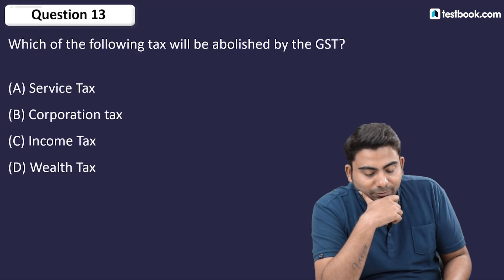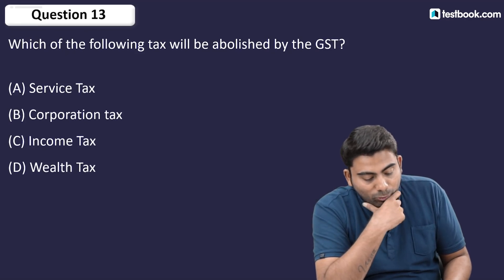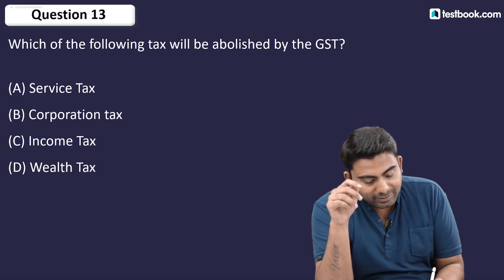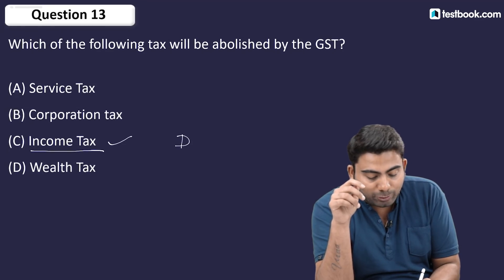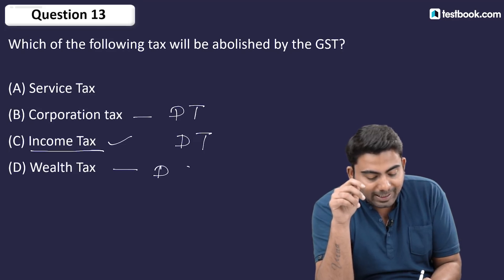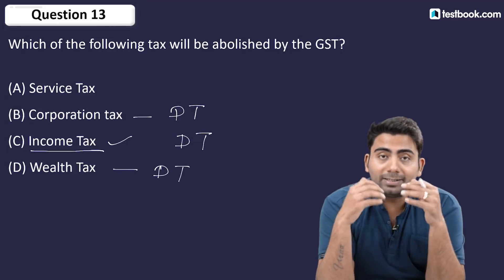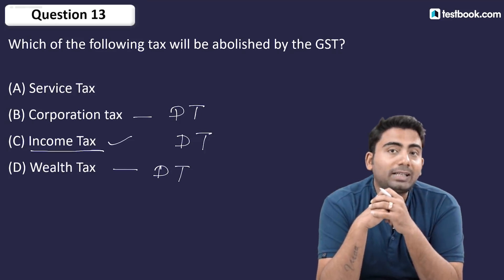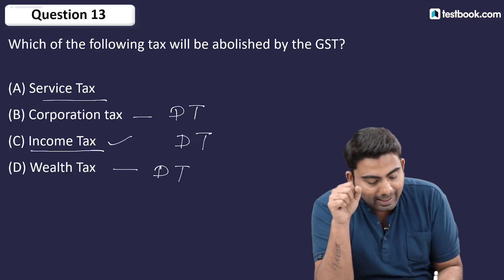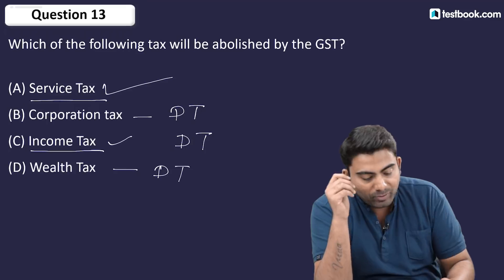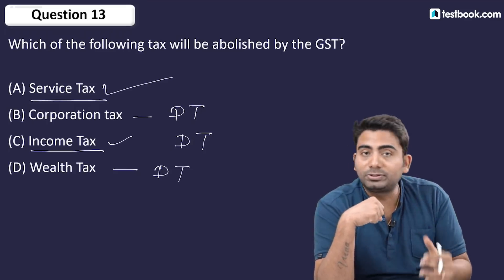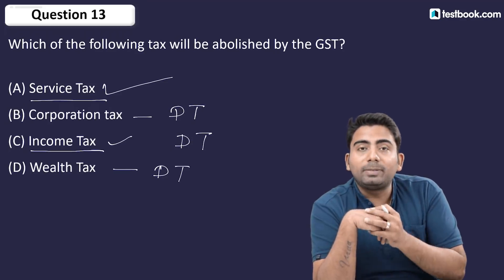Question number 13: Which of the following taxes will be abolished by GST? Option C — income tax — is a direct tax. Corporation tax and wealth tax are also direct taxes. Direct taxes do not come under GST; only indirect taxes do. Service tax is an indirect tax, so it was abolished and merged into GST.